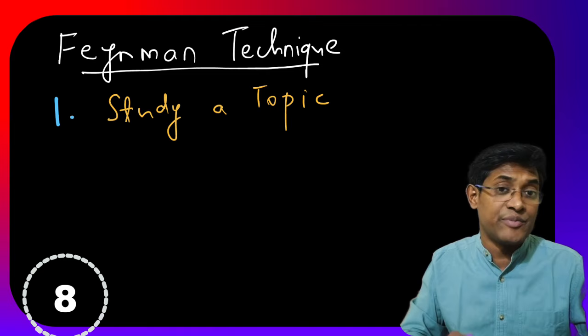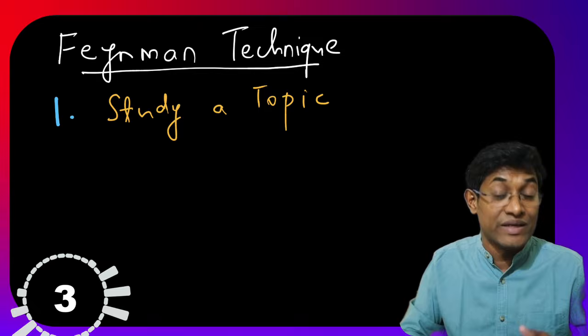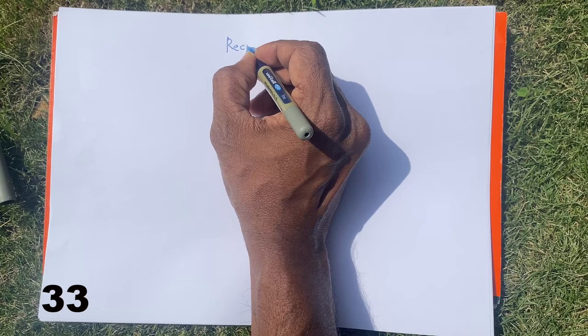The Feynman technique just has four steps. The first step is take any topic that you want to study and go ahead and spend some time with the material you have and study the topic.